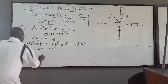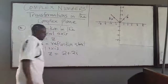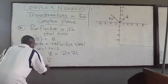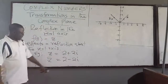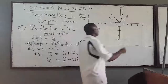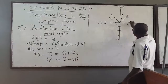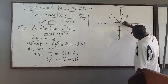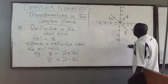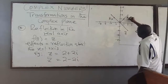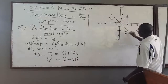Using the same point, let z = 2 + 2i. If I take the conjugate, z̄ will be 2 − 2i. On our diagram, z at (2, 2) is reflected about the real axis to land at (2, −2). So z̄ = 2 − 2i is right there, reflected about the real axis.